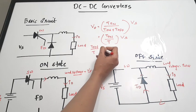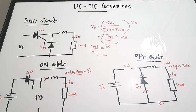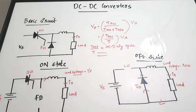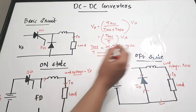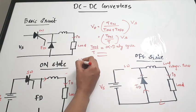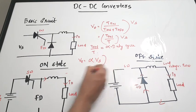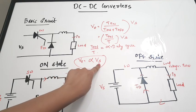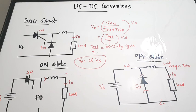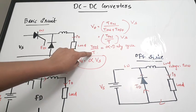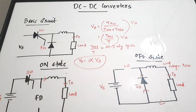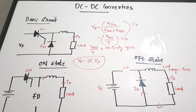The ratio Ton/T is taken as alpha, which is the duty cycle. So you can write: Vout = α × Vs. The output voltage depends on the supply voltage Vs and the duty cycle of the chopper. Duty cycle is given by on-time divided by total time, represented as alpha.